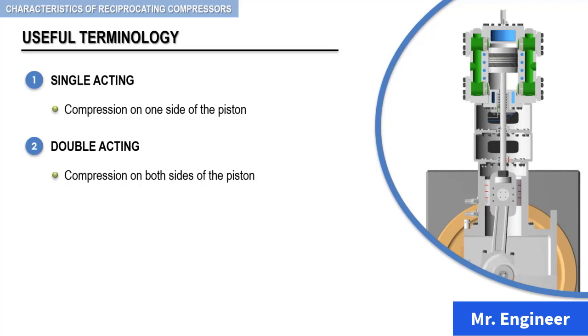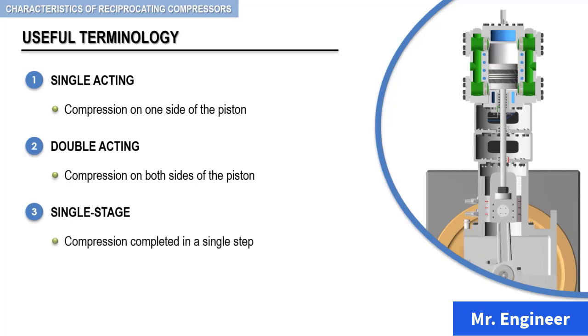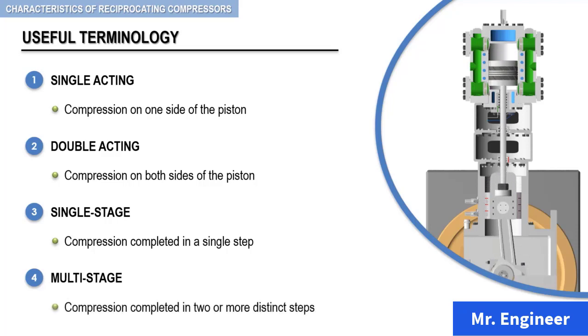Single-stage reciprocating compressors are those in which compression from initial to final pressure is completed in a single step or stage. On the other hand, multi-stage reciprocating compressors are those in which compression from initial to final pressure is completed in two or more distinct steps or stages.